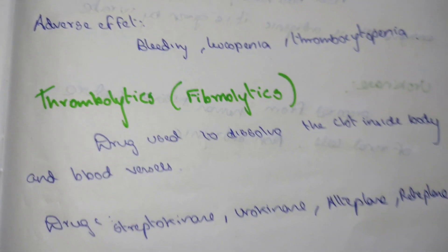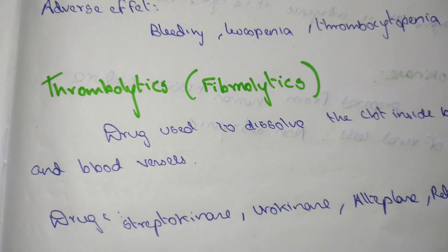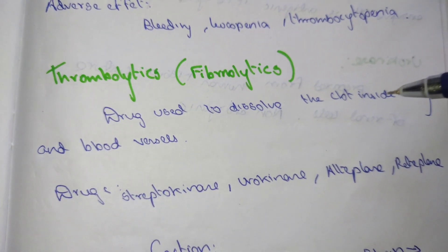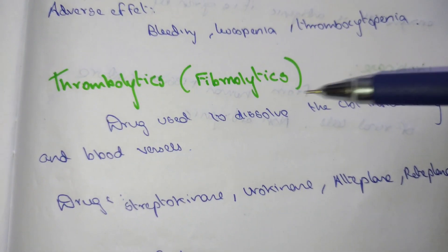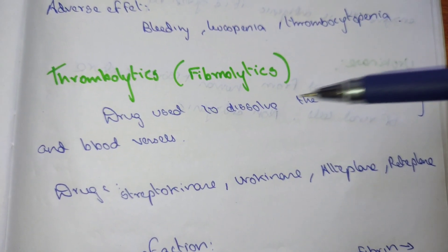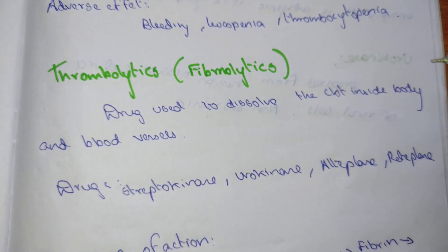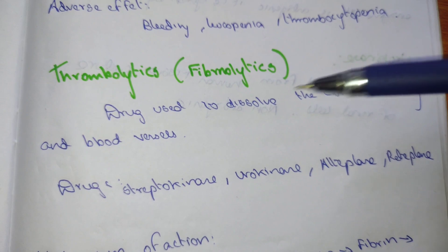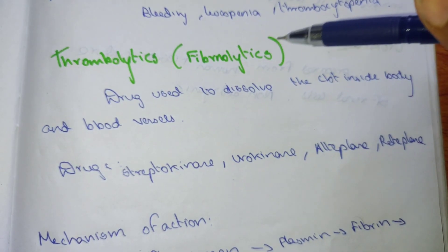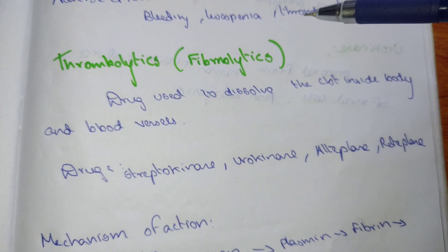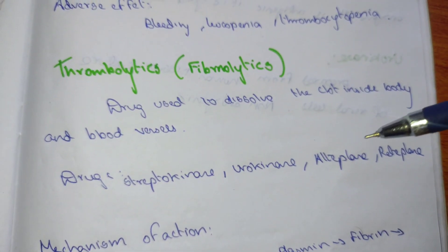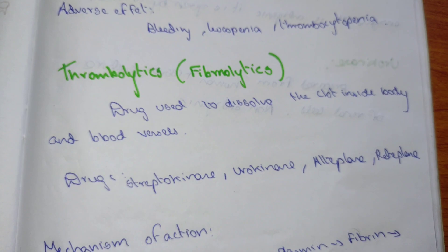Now we are going to see about thrombolytics, which are otherwise known as fibrinolytics. These drugs are used to dissolve the clot inside the body as well as in the blood vessels. The drugs used in fibrinolytics are streptokinase, urokinase, alteplase, and reteplase.